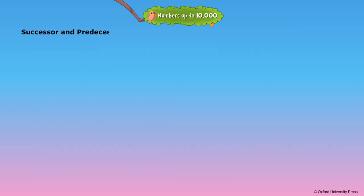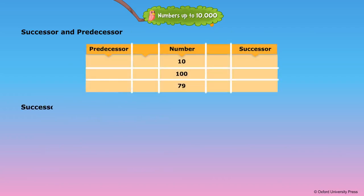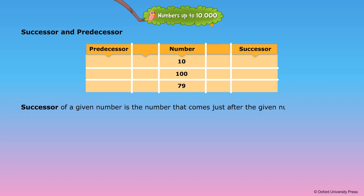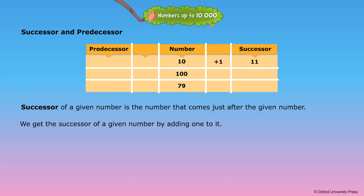Successor and Predecessor. The successor of a given number is the number that comes just after the given number. We get the successor of a given number by adding 1 to it. 10 plus 1 equals 11. 100 plus 1 equals 101. 79 plus 1 equals 80.